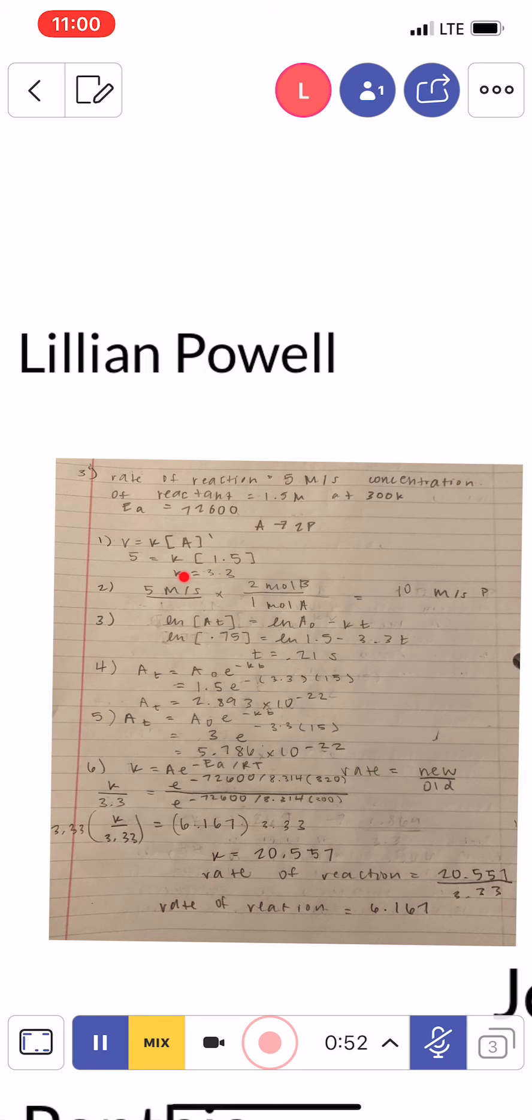we were supposed to find the rate of formation for product P, so I just used the stoichiometry in the equation. I multiplied the rate of reaction times the 2 moles of the product to get 10 molarity per second P. And then for 3,